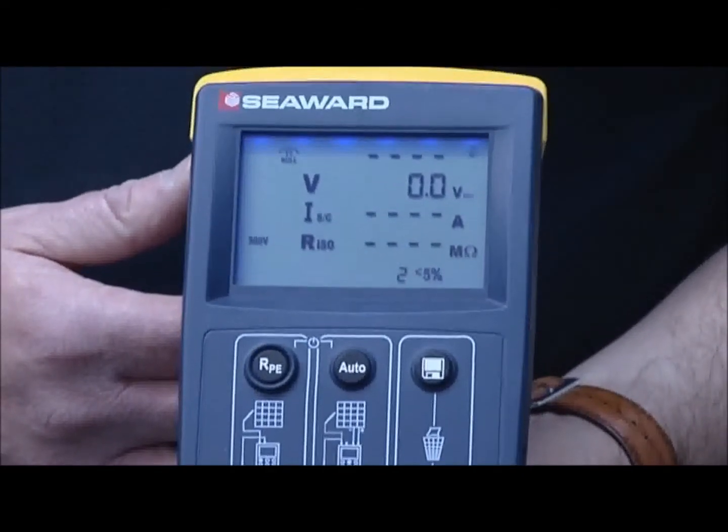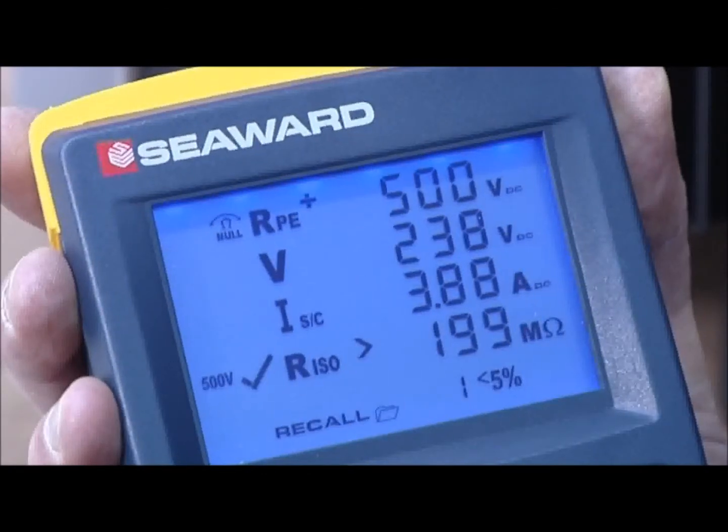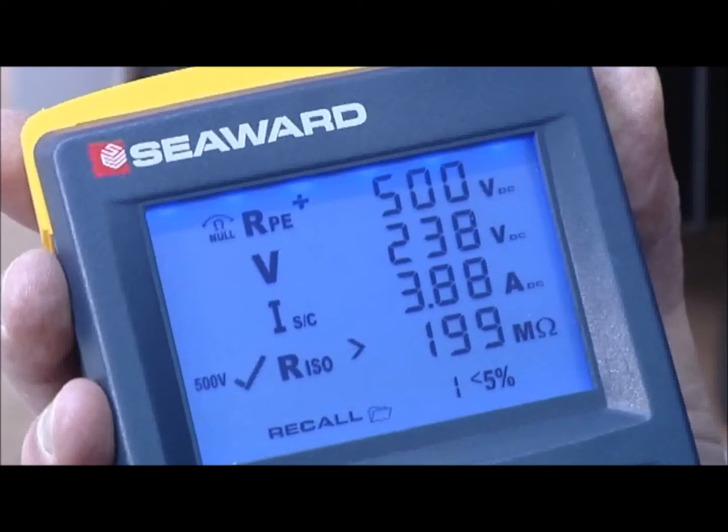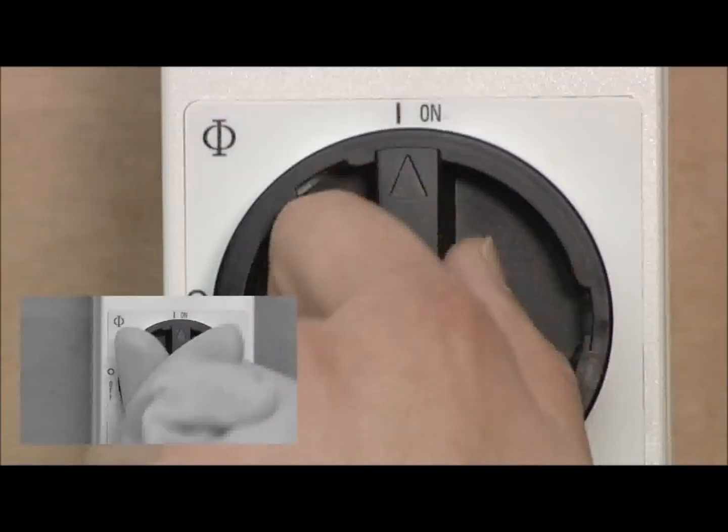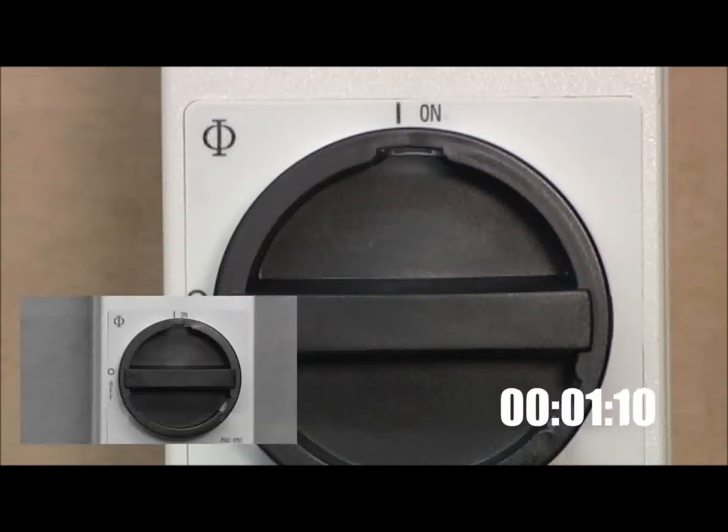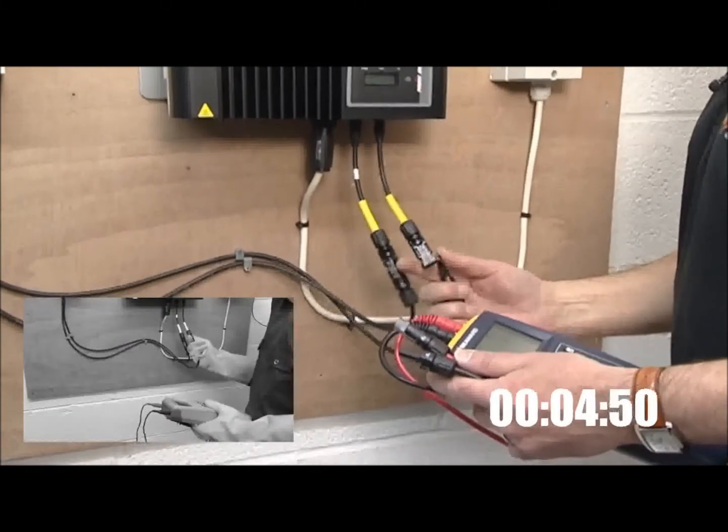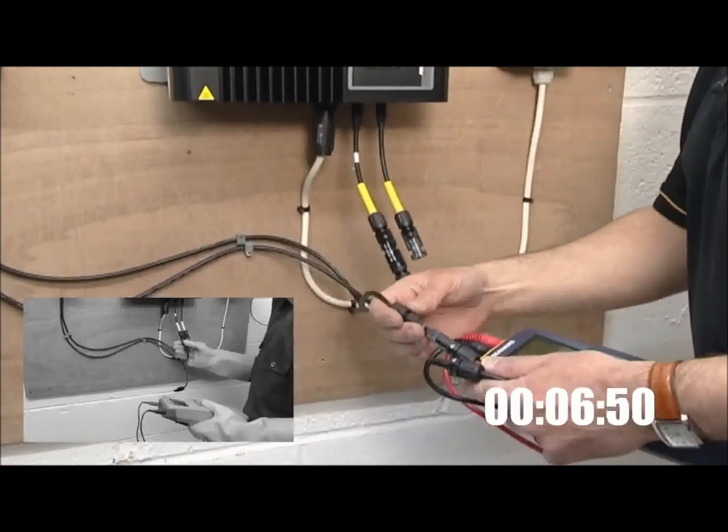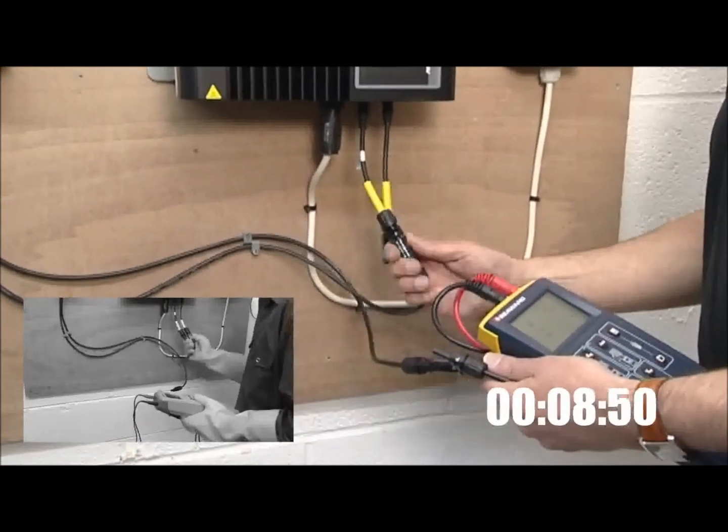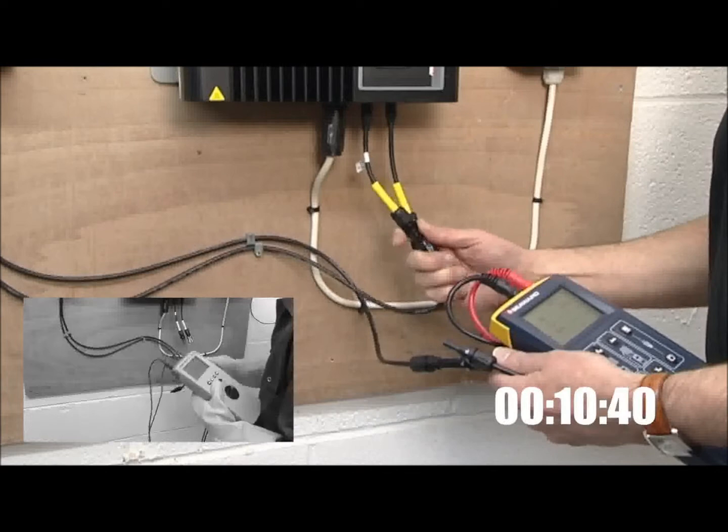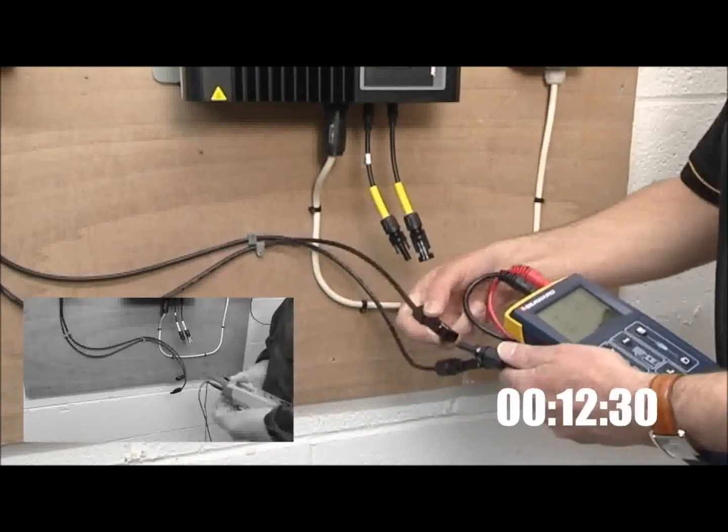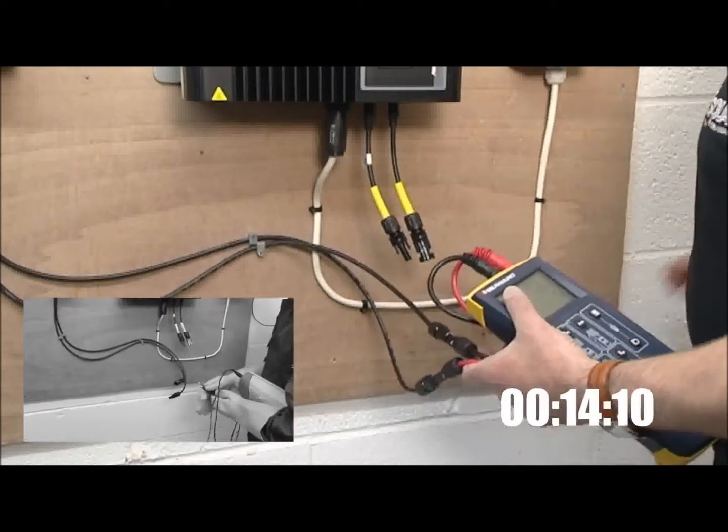We'll put that to the test and compare the PV150 to the traditional method using a multifunction tester and clamp meter. The clock starts when the system is isolated. In the small screen we'll conduct the same test using the traditional method of a multifunction tester and current clamp so you can see how much quicker the PV150 really is.